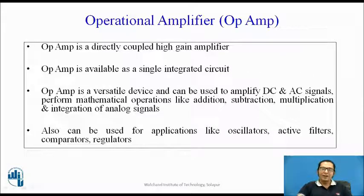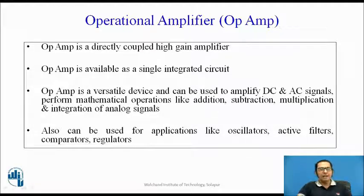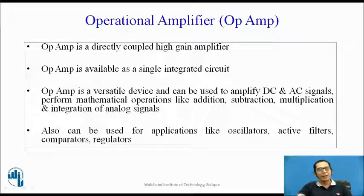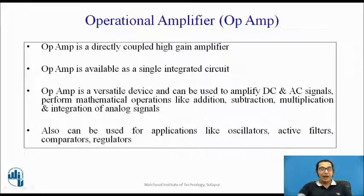Let us start by knowing what is an operational amplifier, which is popularly called as an op-amp. As we already know, op-amp is a directly coupled high-gain amplifier, so it has different stages which are directly coupled without any capacitor coupling. Op-amp is available as a single integrated circuit or IC, and most importantly, op-amp is a very versatile device that can be used to amplify and process DC as well as AC signals.